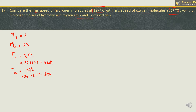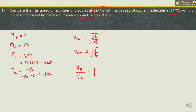We need to compare the RMS speeds. The formula for RMS speed is √(3RT/M₀), where M₀ is molecular mass, R is the universal gas constant, and T is temperature. RMS velocity is directly proportional to √T and inversely proportional to √M₀. So the ratio of RMS velocity of hydrogen to oxygen is √(T_H/T_O) × √(M_O/M_H).